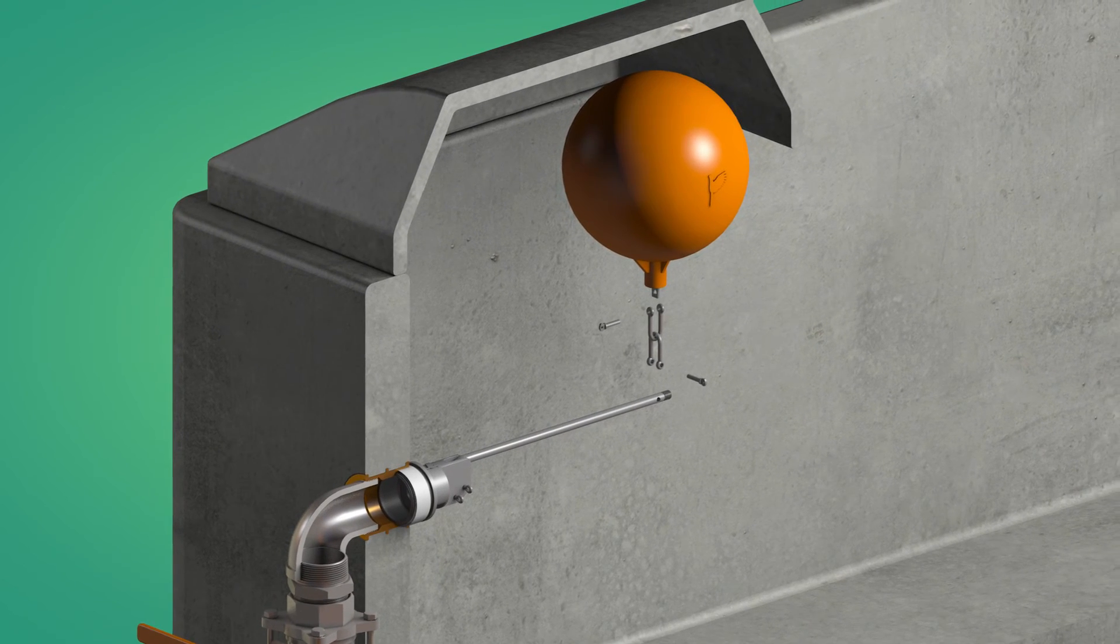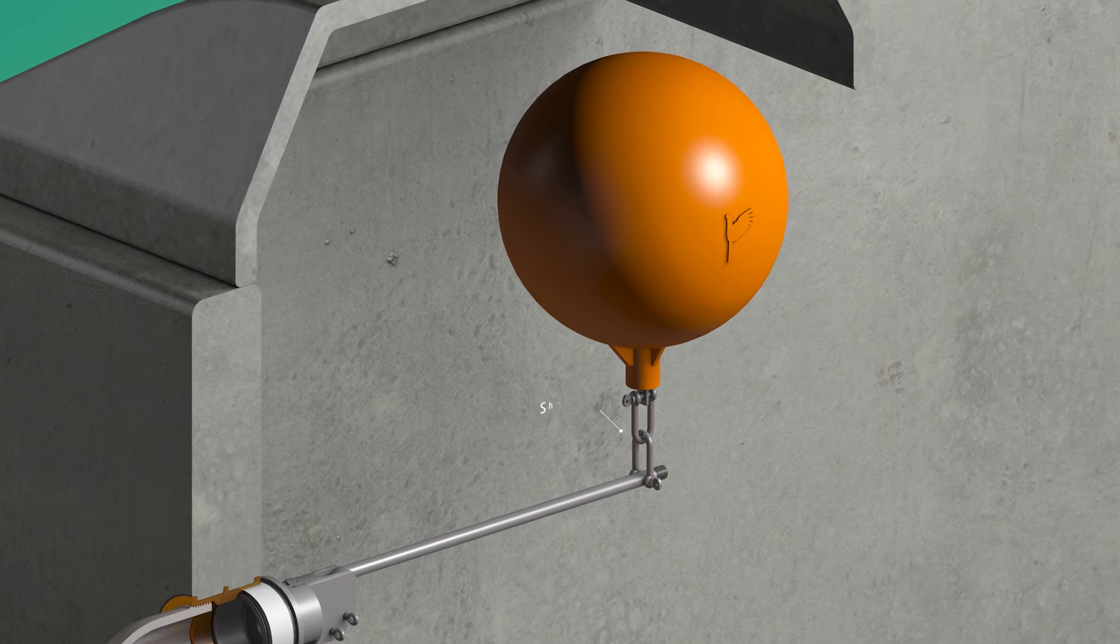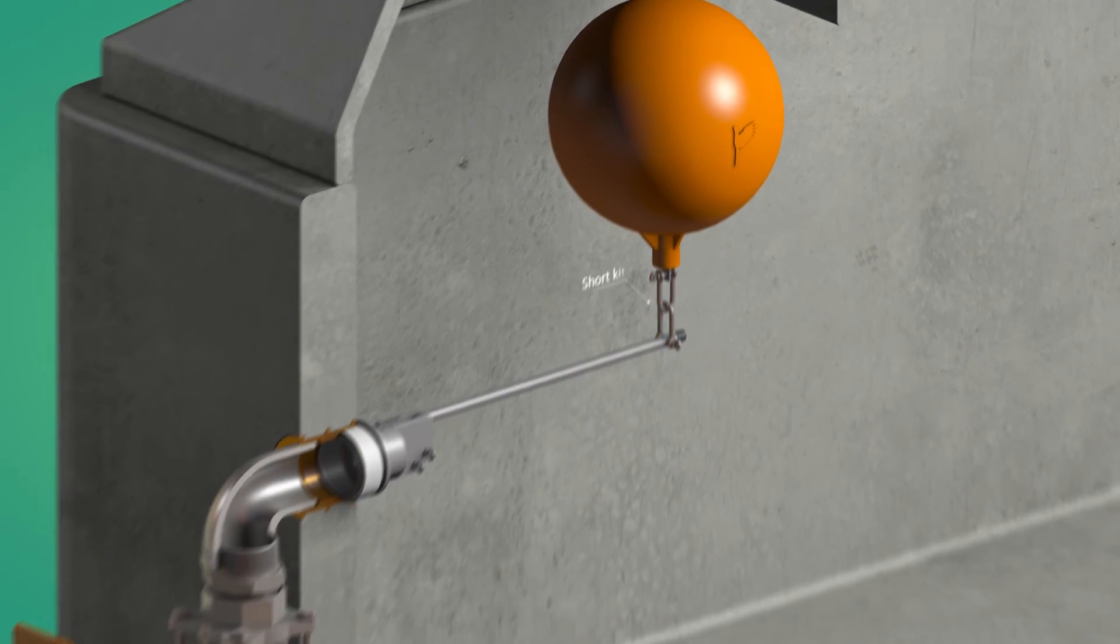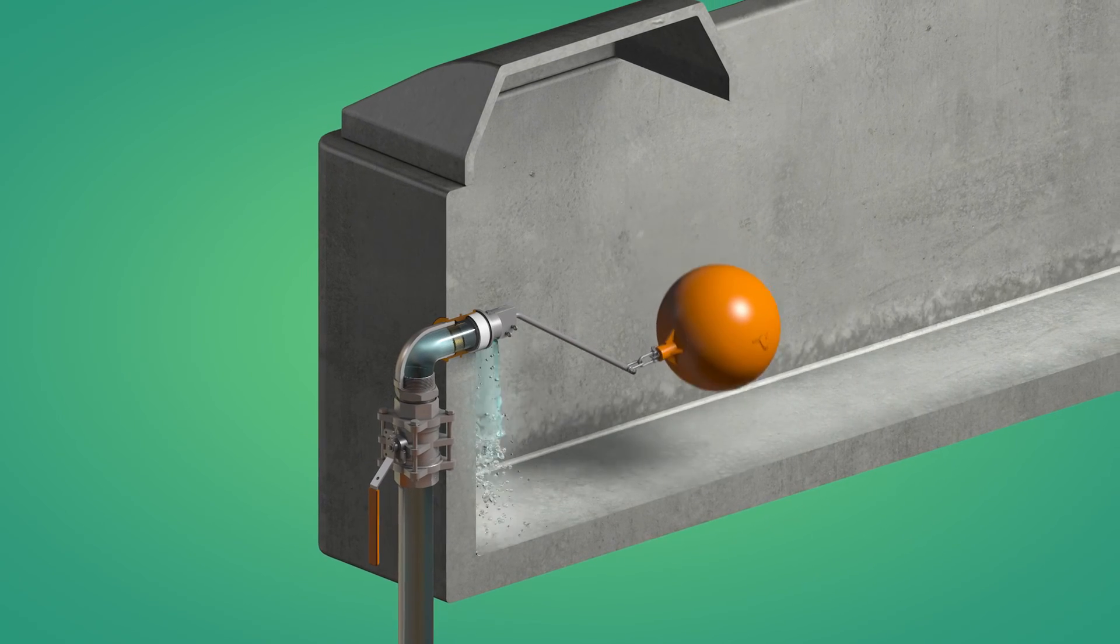With the float fitted to the end of the arm, in this case using the short kit, the water to the trough can be turned back on. As the water enters the trough through the valve, the water level rises within the trough.